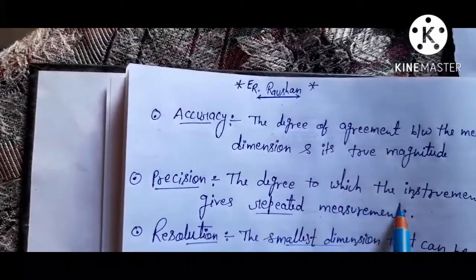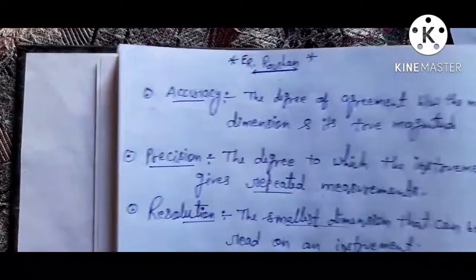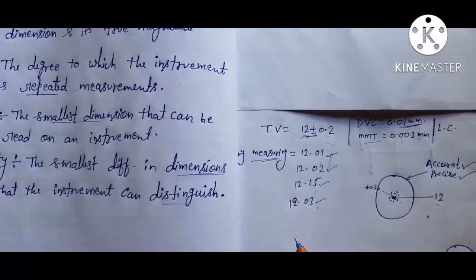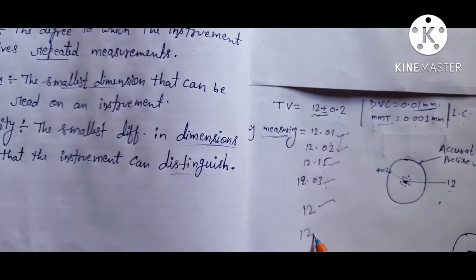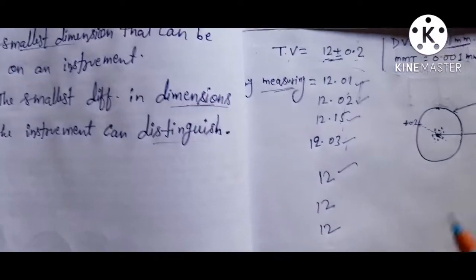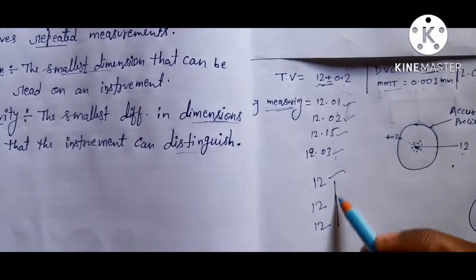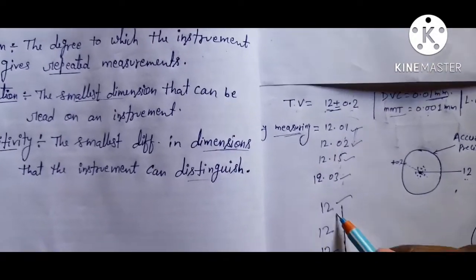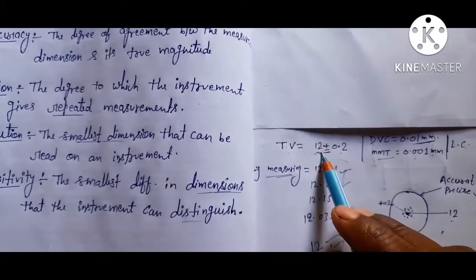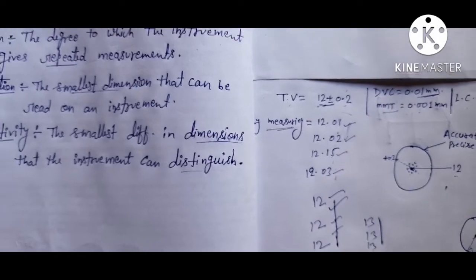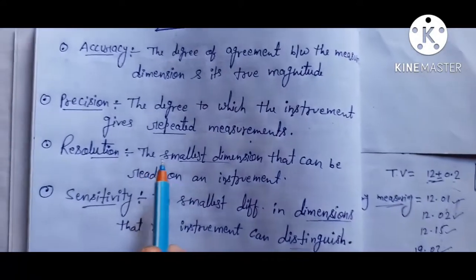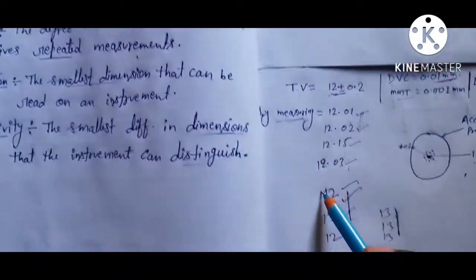Now, precision is the degree to which an instrument gives repeated measurements. For example, if the true value is 12 but the instrument consistently gives 13, 13, 13 — that is precision, because all values are the same repeated readings. The instrument is precise but not accurate in this case.